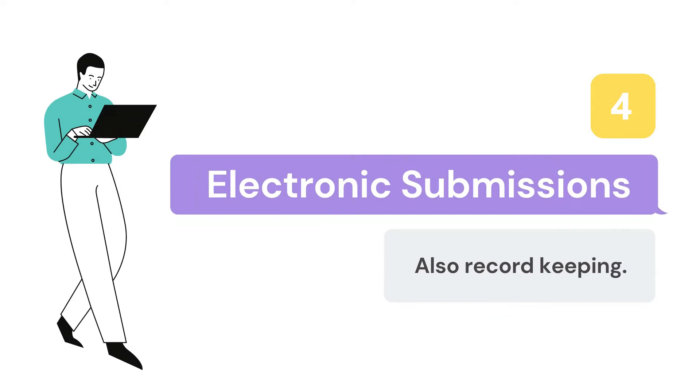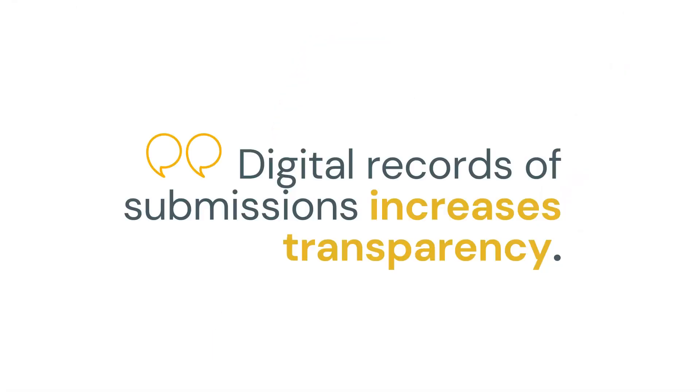Fourth, use electronic submissions and record-keeping. If you use electronic submissions, there is a lot more transparency and tracking ability. Knowing when, where, and how the document was submitted helps with checking it for plagiarism.